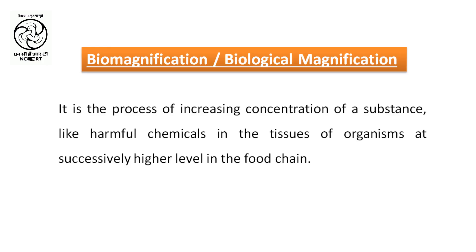I've heard that some harmful chemicals absorbed by the autotrophs progressively increase in higher trophic levels. Yes, that is correct. Certain fertilizers and pesticides absorbed by the plants get accumulated to the next trophic level progressively. This accumulation of pesticides and fertilizers to higher trophic levels is known as biomagnification or biological magnification. We human beings occupy the top level of the food chain.